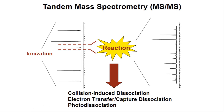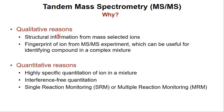Why would we want to do MS/MS? There are at least two general reasons. The first is qualitative: structural information about analytes can be obtained, as the tandem mass spectrum effectively provides a fingerprint of the ion, often used like a puzzle to identify what that ion is. Because this can be combined with liquid chromatography or gas chromatography, we can identify compounds in complex mixtures both from the separation and from the rapid MS/MS experiment. There are also quantitative reasons — MS/MS can provide highly specific, essentially interference-free quantitation of an ion in a mixture using techniques known as single reaction monitoring or multiple reaction monitoring.